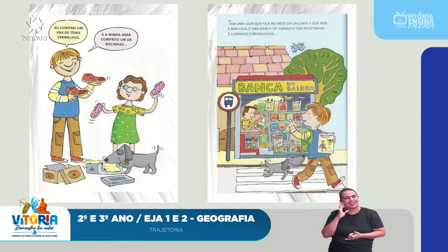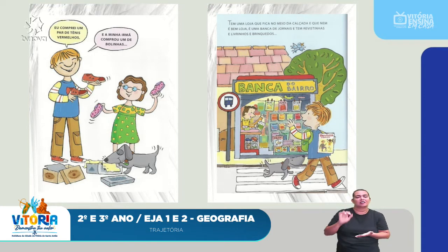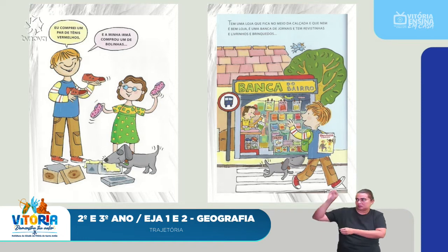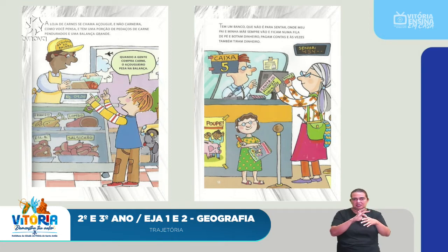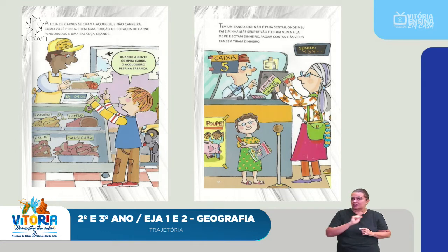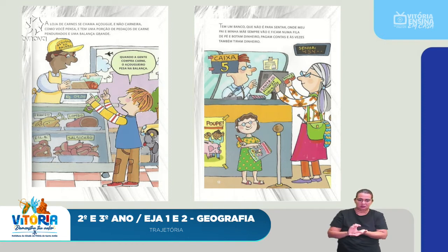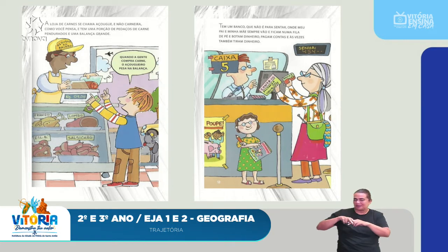The meat shop is called açougue — not carneria — and has lots of pieces of meat hanging on a large scale. When we buy meat, the butcher weighs it on the scale. There is also a bank — not for sitting — where my father and mother always go, stand in line, deposit money, pay bills, and sometimes withdraw money.